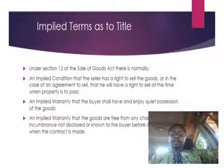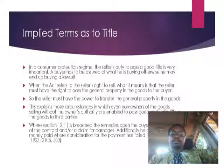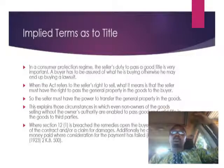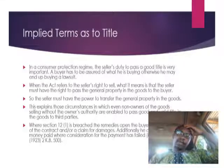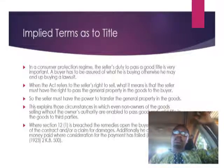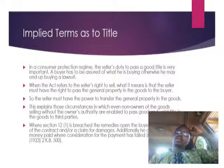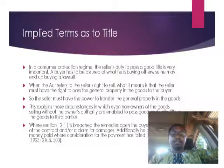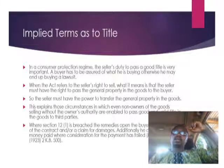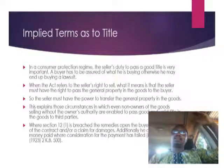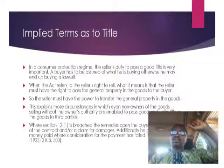And there is an implied warranty that the goods are free from any charge or encumbrance not disclosed or known to the buyer before or at the time when the contract is made. This section deals with title to the goods — the seller has a duty to pass good title to the buyer. When we talk about title, we are talking about general property, meaning ownership. The right to sell means the seller should be able to pass the general property — the ownership — in the goods.